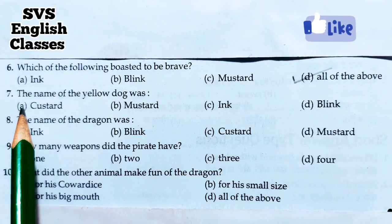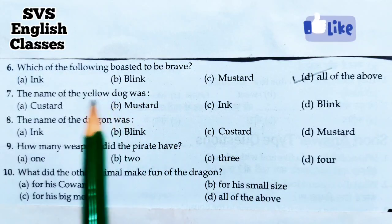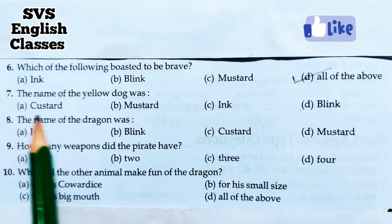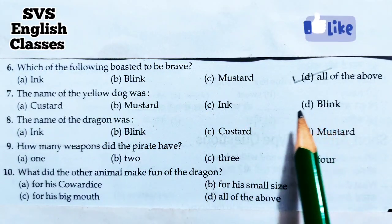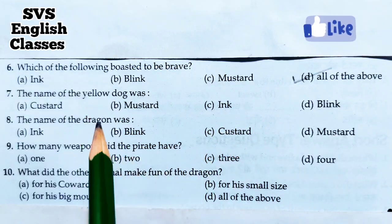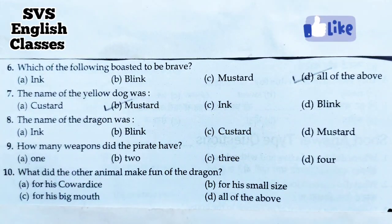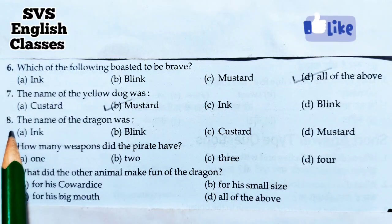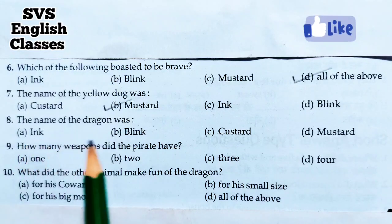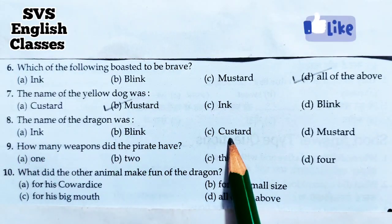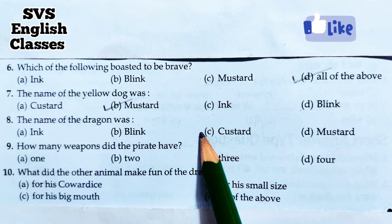Number seven: The name of the yellow dog was - A. Custard, B. Mustard, C. Ink, D. Blink. The yellow-colored dog's name was Mustard, so option B is correct. Number eight: The name of the dragon was - A. Ink, B. Blink, C. Custard, D. Mustard. The dragon's name was Custard, so option C is correct.